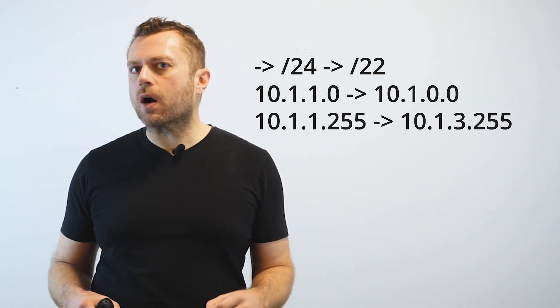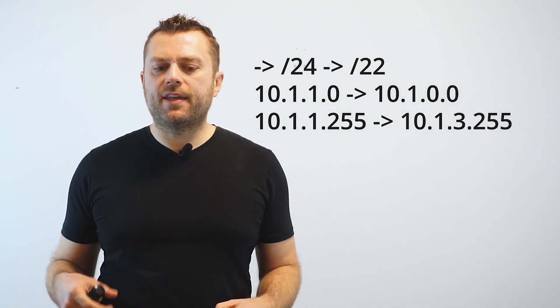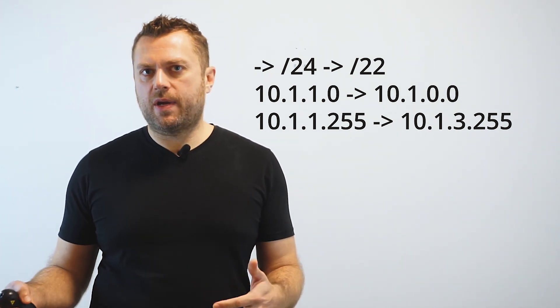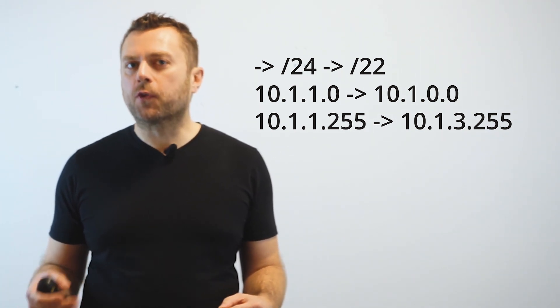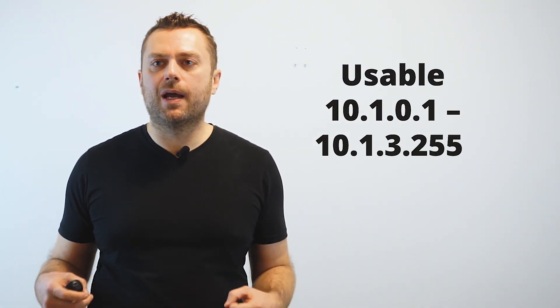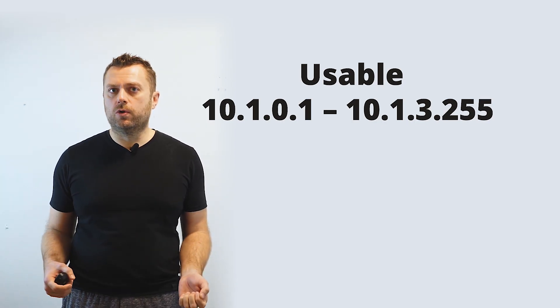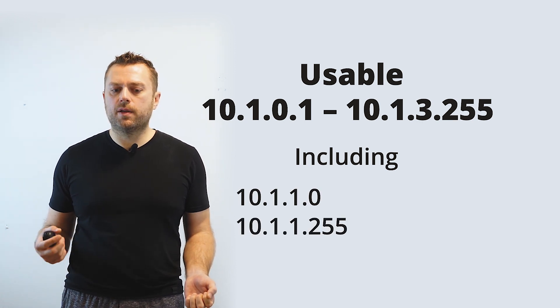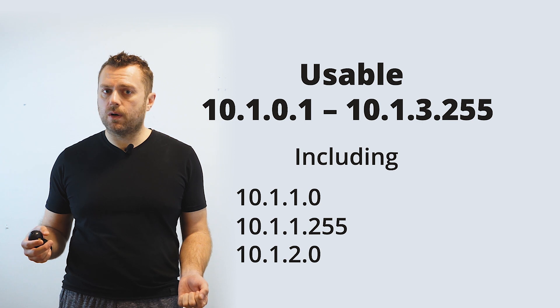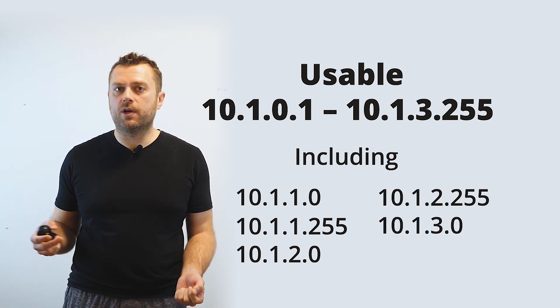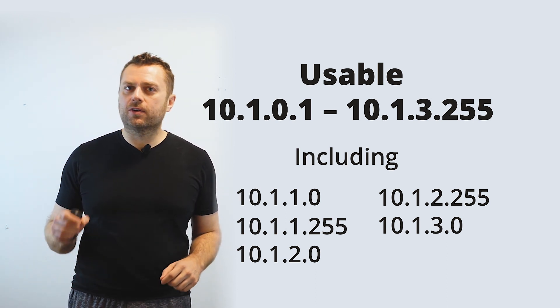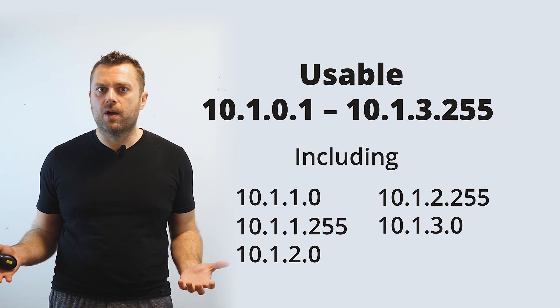Previously we couldn't use those because they were a network and broadcast address, but now all of a sudden they're usable just by changing the subnet mask. What if we take this network and change the subnet mask yet again to make it even larger? Let's change from /24 to /22. Now our network becomes 10.1.0.0 and our broadcast becomes 10.1.3.255, giving us a usable range of 10.1.0.1 up to 10.1.3.254. This range now includes 10.1.1.0, 10.1.1.255, 10.1.2.0, 10.1.2.255, and 10.1.3.0 — five IP addresses ending in .0 or .255 that you can actually use as hosts.